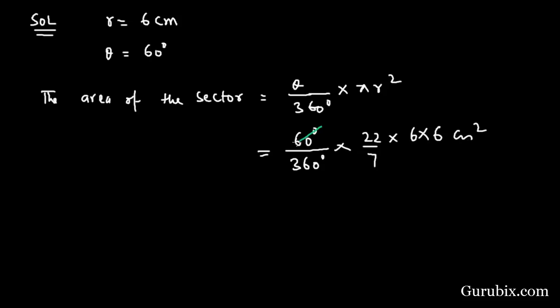We can cancel out, it goes in 6 times. So this is equals to 22 times 6 over 7 centimeter square. This is equals to 132 over 7 centimeter square.